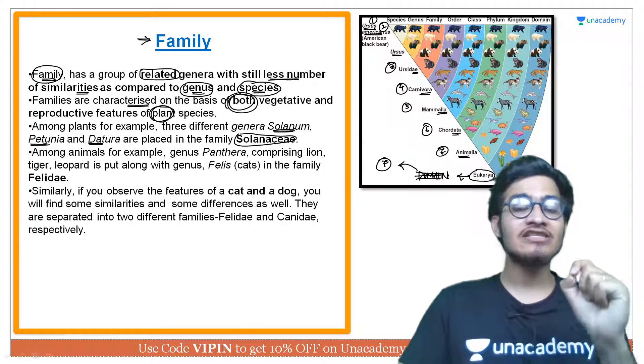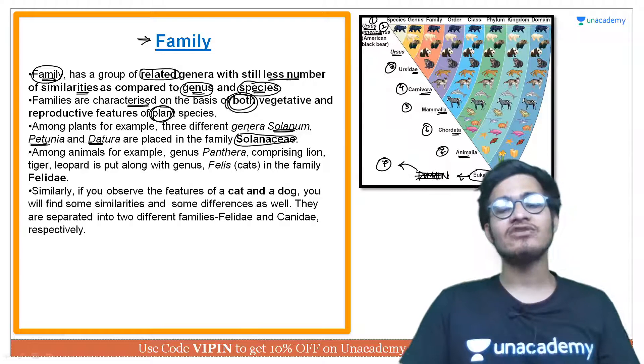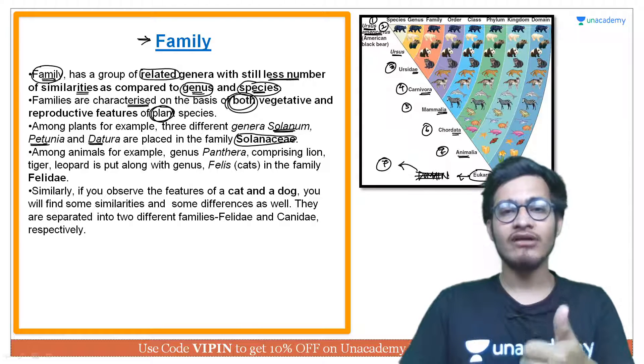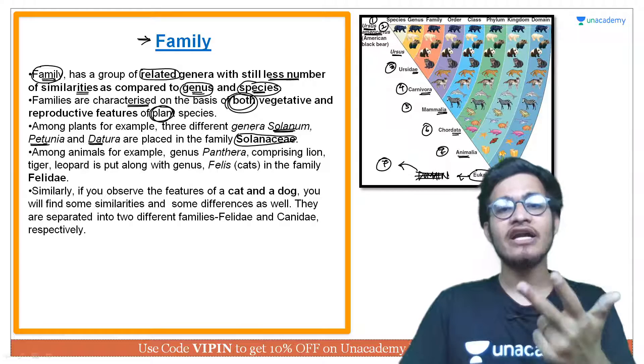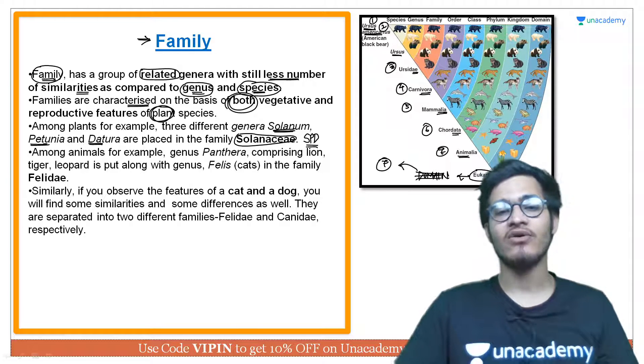Solanaceae is the family within which genus Solanum, Petunia, and Datura are placed — SPD.